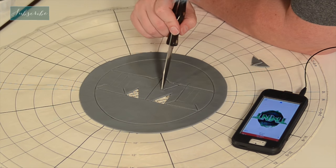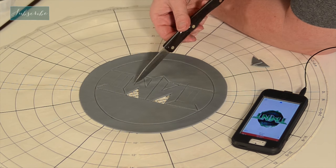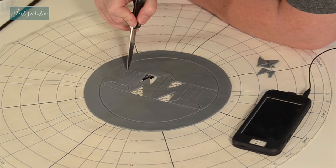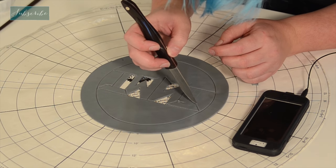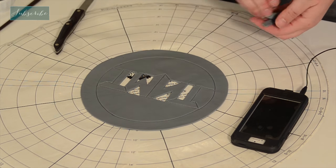Once you start cutting, you can go ahead and start weeding out the parts that we're not going to need, like the in-between of the M's and the N's and next to the posts of the T's. Now we have our backwards logo.